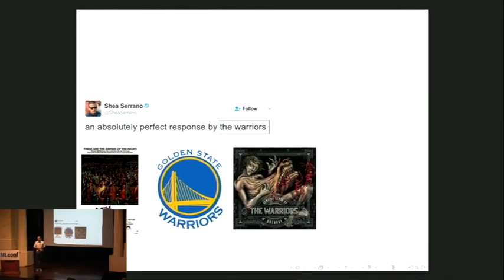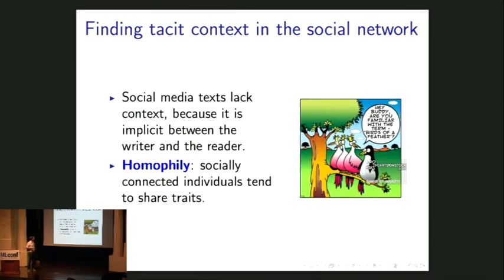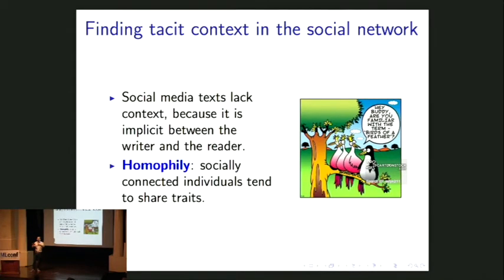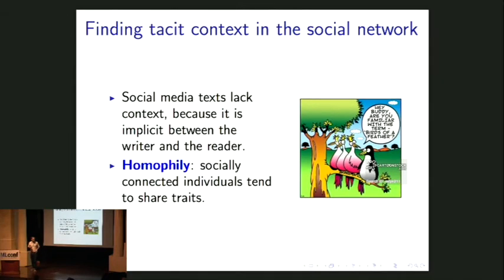If he really thought it was confusing, he would have given more information. So can we reconstruct the tacit knowledge he's assuming his audience has? One way to think about this is that writers and their readers in social media are embedded in a social network — there's a set of people the author knows, with connections between them. A phenomenon observed robustly in all kinds of social networks is homophily: birds of a feather flock together. Something about this author's position in the social network makes it possible for him to use text that globally would be ambiguous, but in his corner of the social network is not ambiguous.